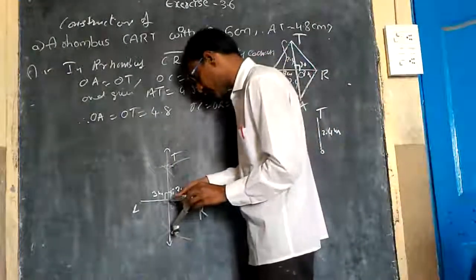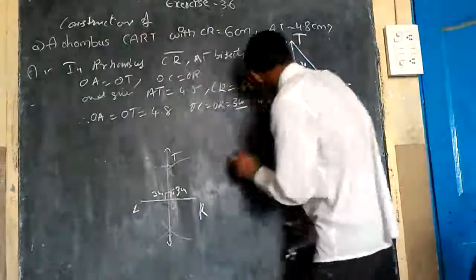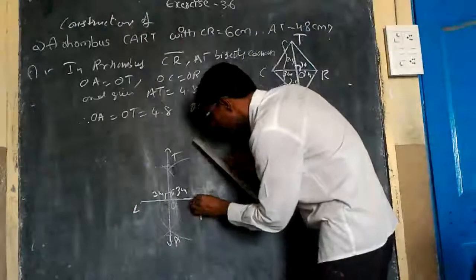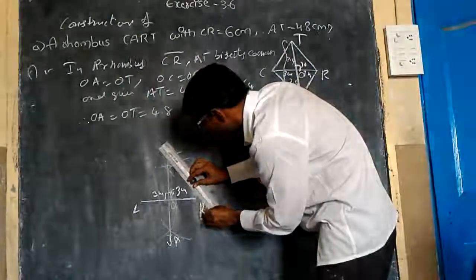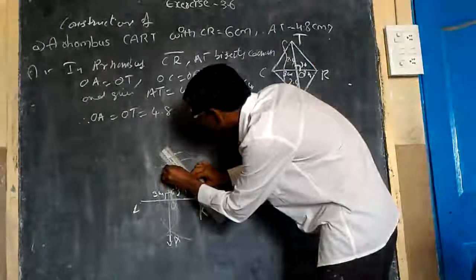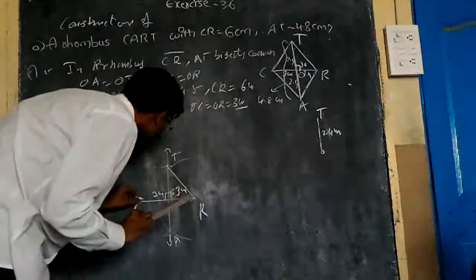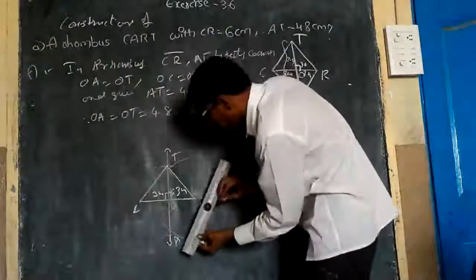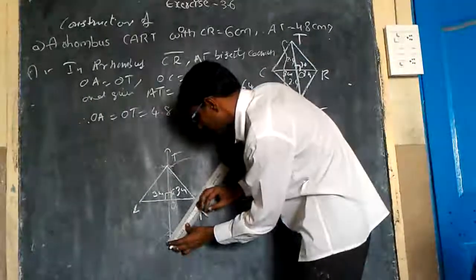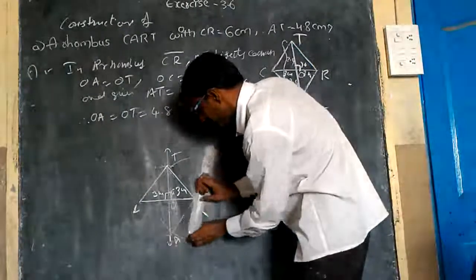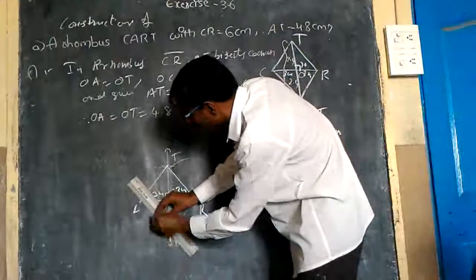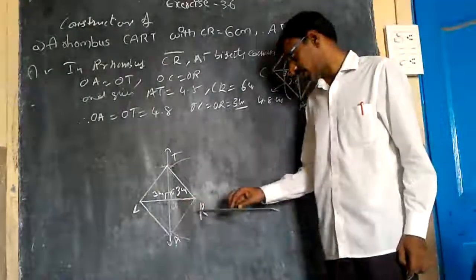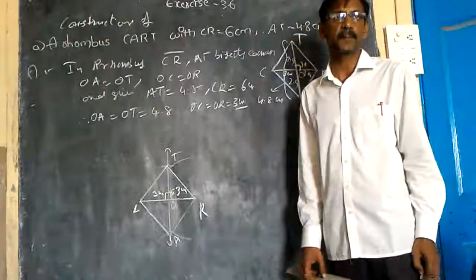With the same radius and center, I draw an arc on the other side as well. By joining T-R, T-C, and the corresponding points A-R, we get the Rhombus. By drawing C-A, I got the Rhombus — the required Rhombus C-A-R-T. This is the way you construct the Rhombus.